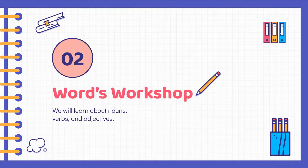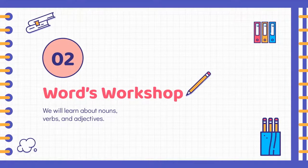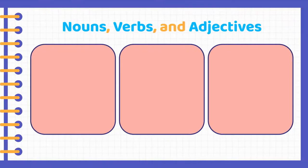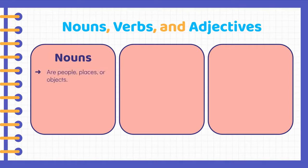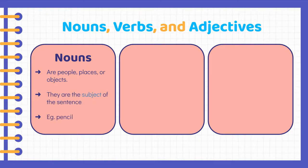Section 2: Words Workshop. Nouns, verbs, and adjectives. Nouns are people, places, or objects. They are the subject of the sentence. An example is a pencil.